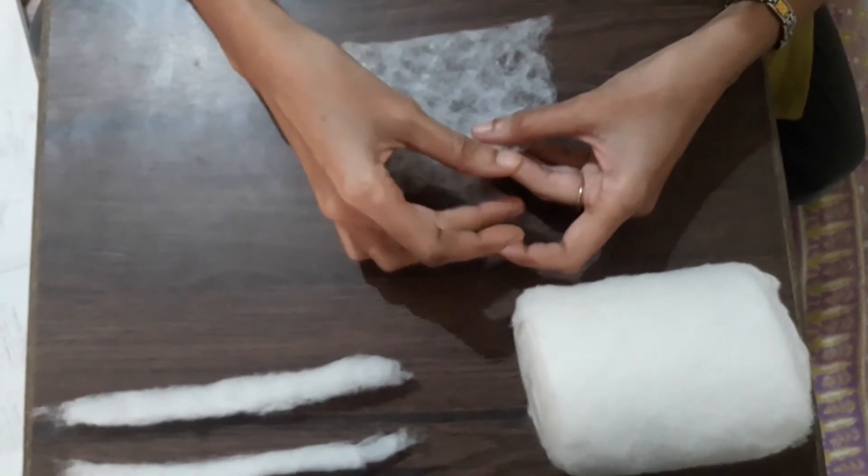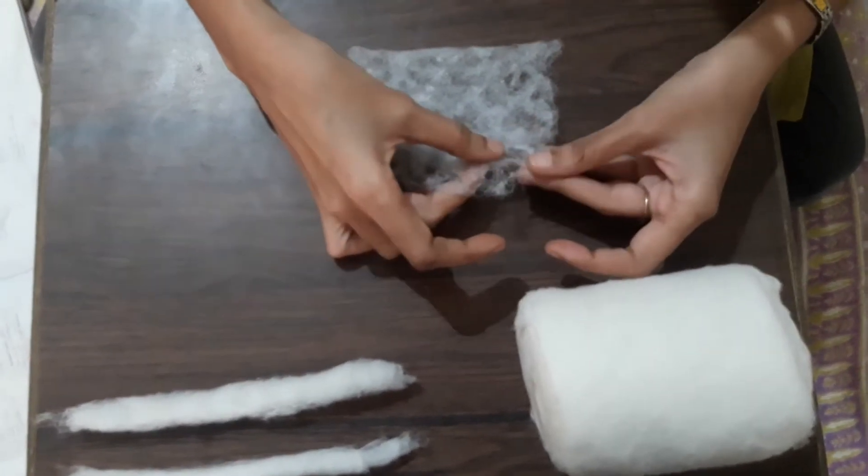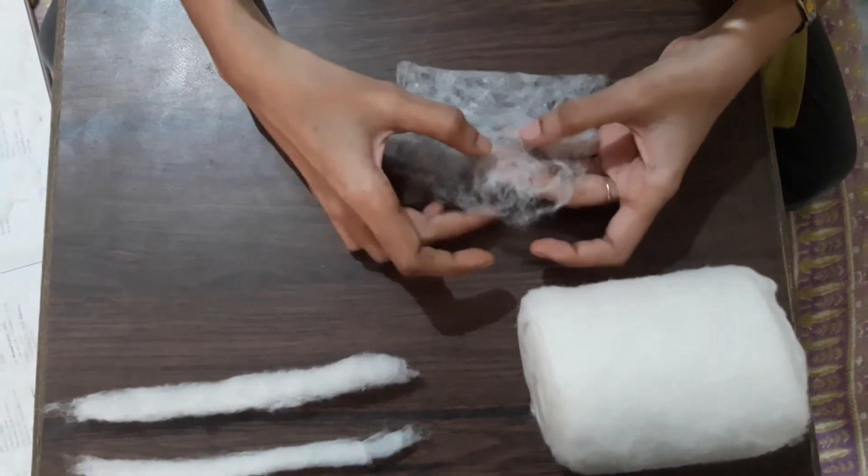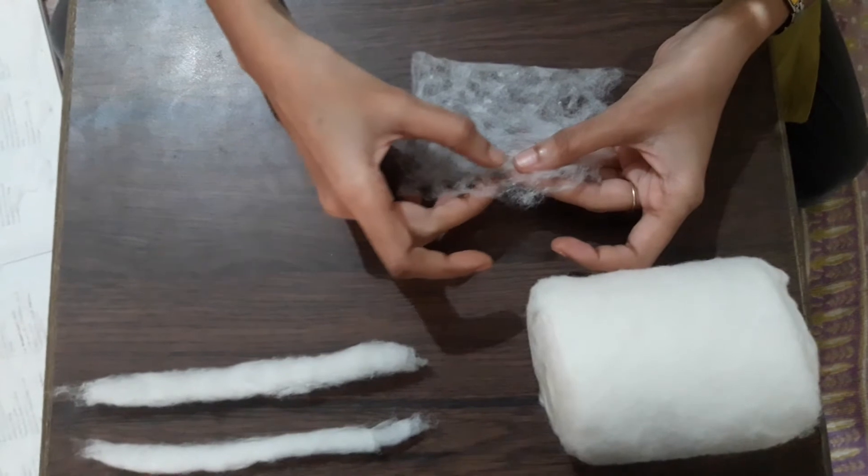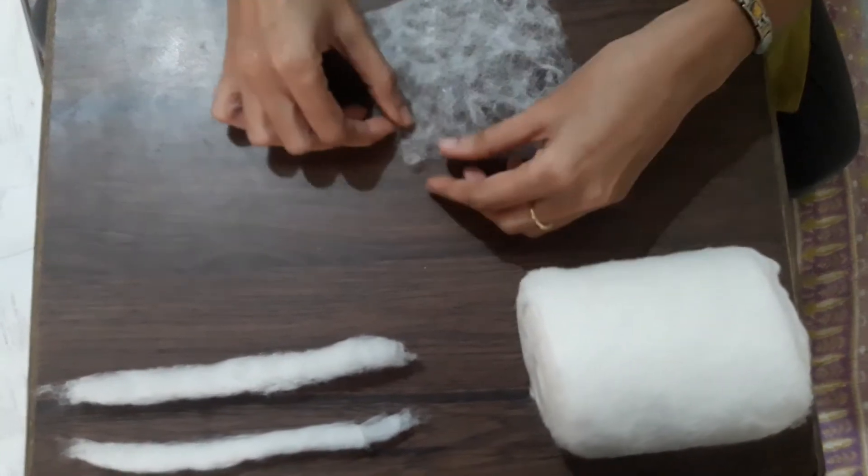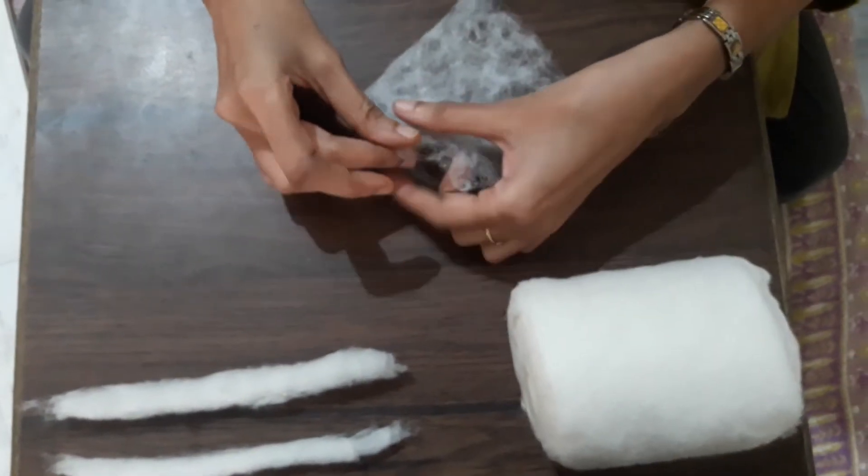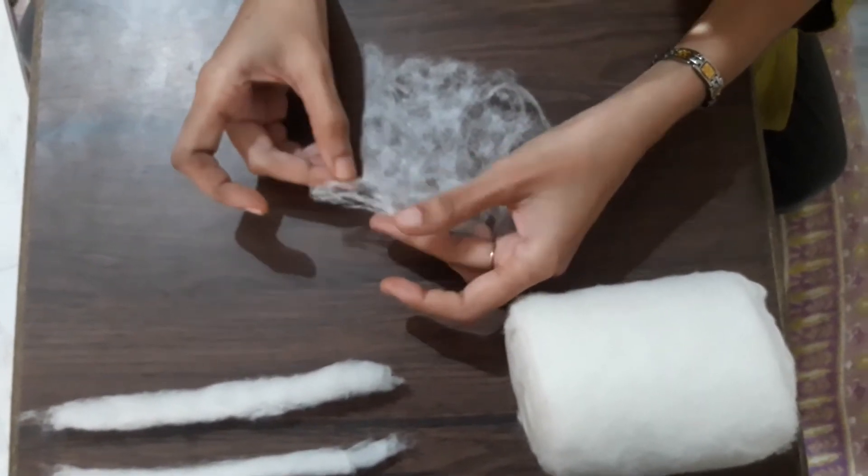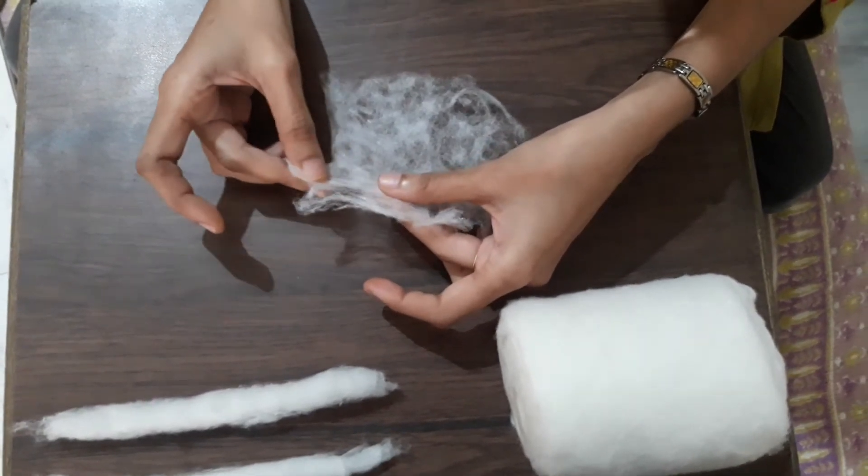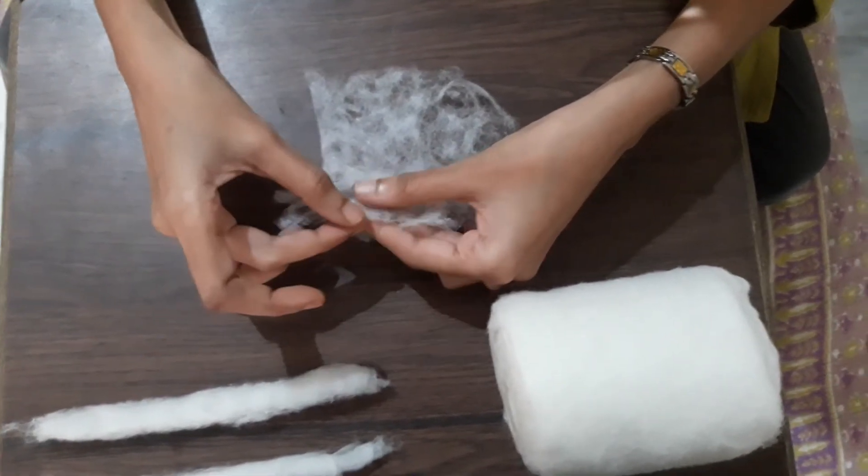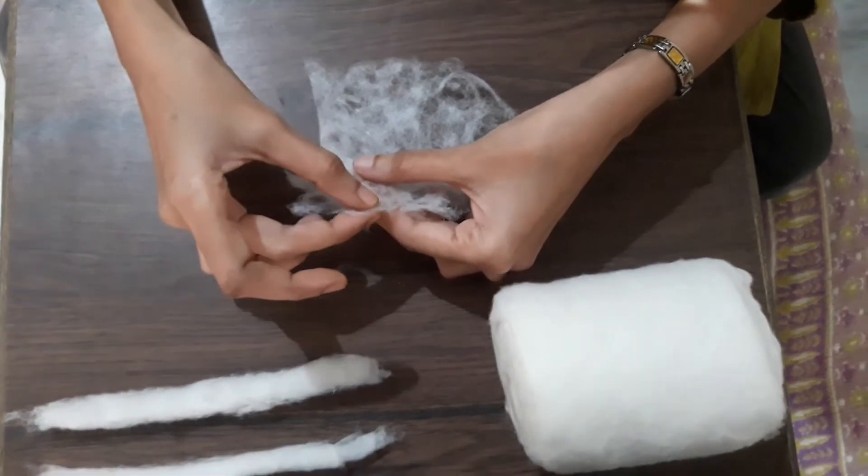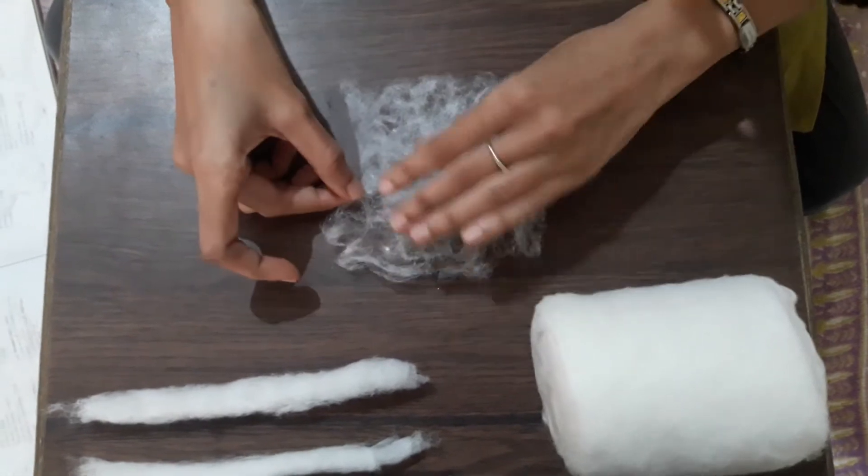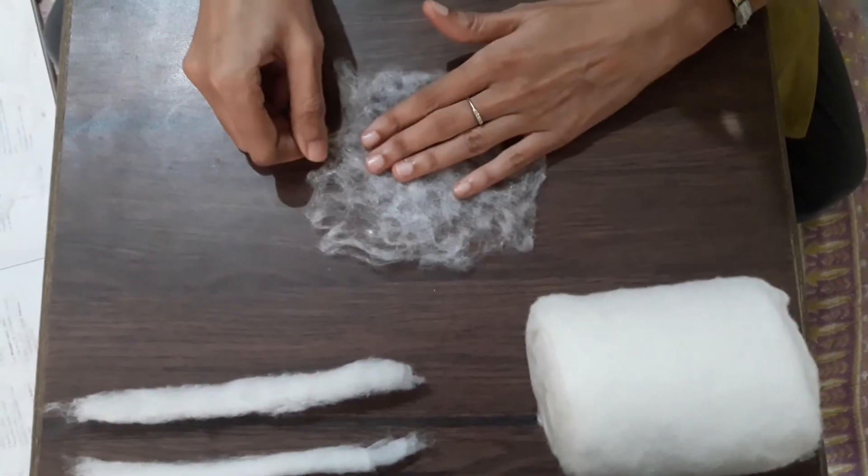So we again spread it out. As you can see, since we folded it, the layer is very dense. So again we make it as sparse as possible. We keep track of the directions that it was horizontal. So we again start pulling it horizontally and little bit vertically so that we get a rough rectangular shape layer of cotton fibers.